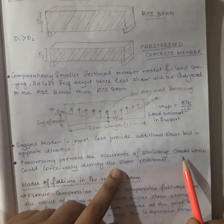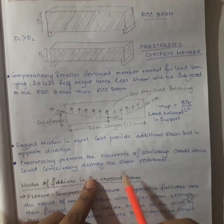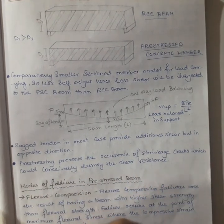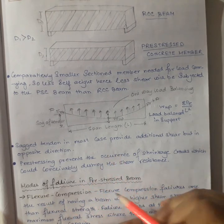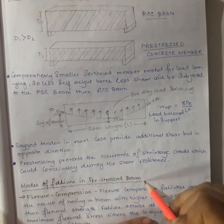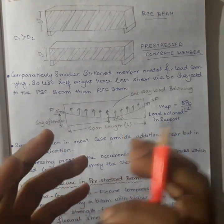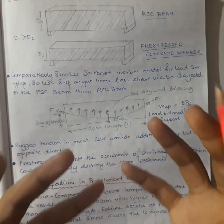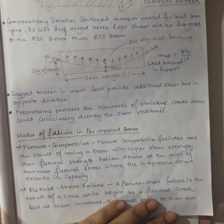Prestressing prevents the occurrence of shrinkage cracks, which could conceivably destroy the shear resistance. Now we will study the modes of failure in a prestressed beam — what are the modes of failure that actually contribute to the failure of a prestressed concrete beam.